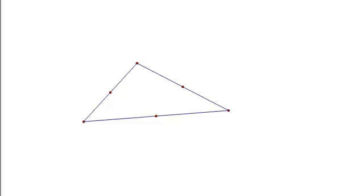Now I'm going to create a perpendicular line through each of the midpoints that is perpendicular to the segment the midpoint is on. I've created those three perpendicular lines — let's notice some things. The first thing you should notice is that the three perpendicular bisectors meet in a point, which is interesting because three lines don't usually meet in a single point. Two lines always meet in a point, but three lines don't always intersect at the same point. With Geometer Sketchpad I can change the triangle and those three perpendicular bisectors always meet in a point.